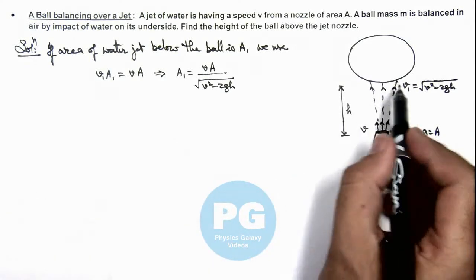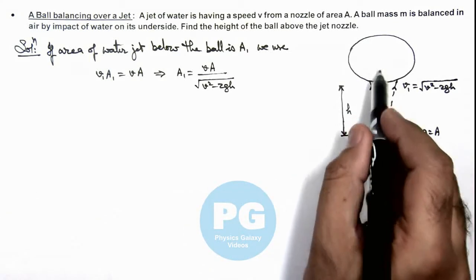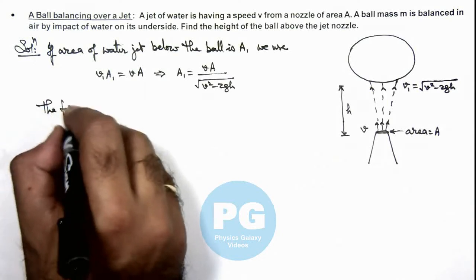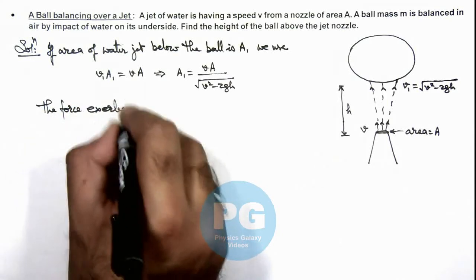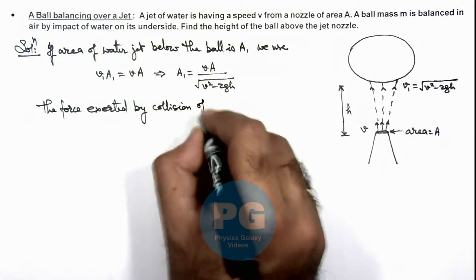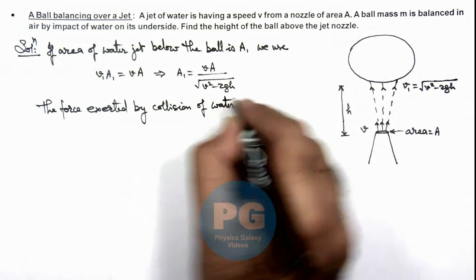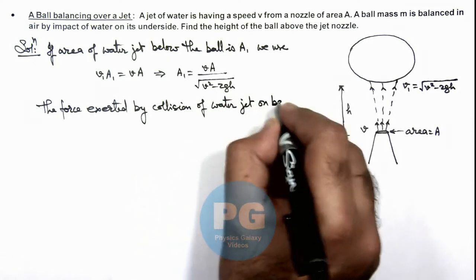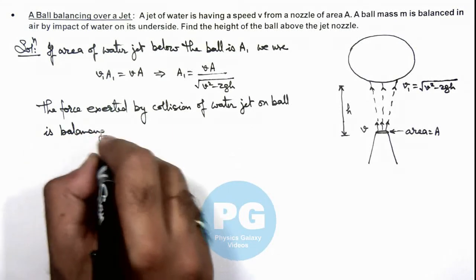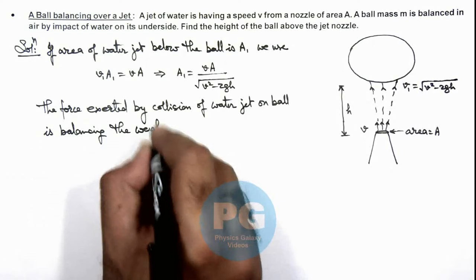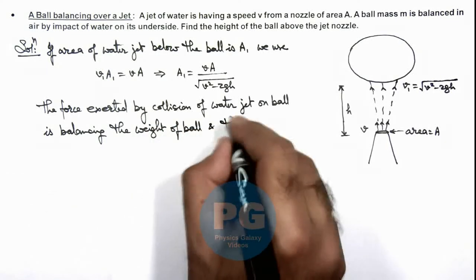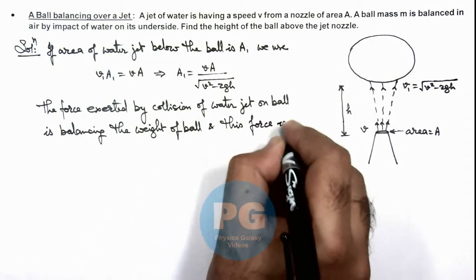And now if we talk about the balancing of the weight of the ball, then we can say the force exerted by collision of water jet on ball is balancing the weight of ball. And this force we have already studied, this force is given as: